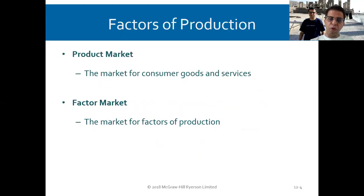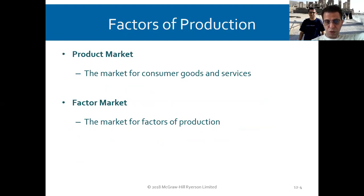So what's a product market? It's the market for consumer goods and services. The factor market is the market for factors of production. The factors of production are goods used for production — labor is also part of the factor market.